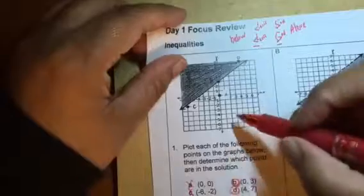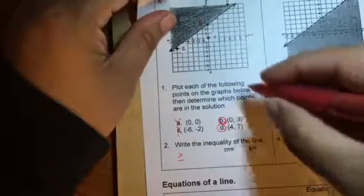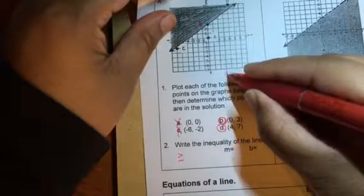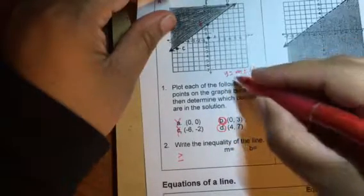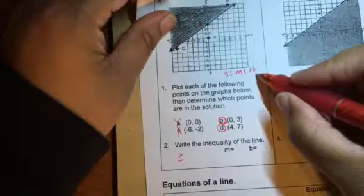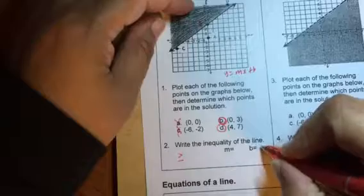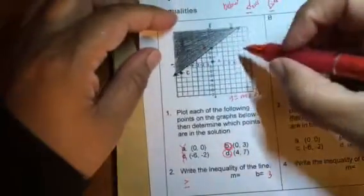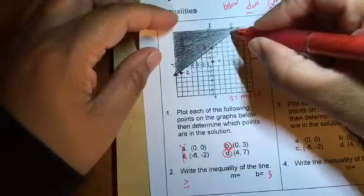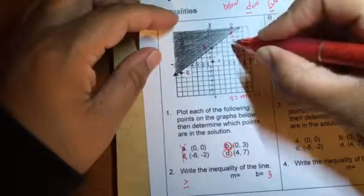Now your y intercept is your b. So if you'll remember, your equation of your line is y equals mx plus b, where m is your slope and b is your y intercept. So our y intercept is 3. Our slope, we have to go find another point that's on here. So if you look, I'm going down one, two, three units.